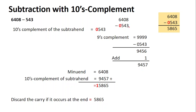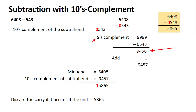Your subtrahend is now 0543. Proceed with the steps. To find the tens complement, there are four digits, so write four nines and write the subtrahend 0543. Subtract: nine minus three is six, nine minus four is five, nine minus five is four, nine minus zero is nine. This is your nines complement. To find the tens complement, add one: 9456 plus one is 9457.